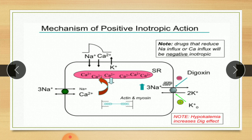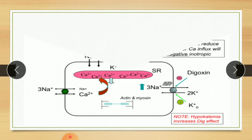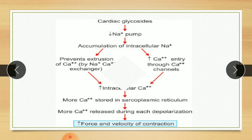So the target of digitalis cardioglycoside is the sodium-potassium pump. Cardioglycosides inhibit this sodium-potassium ATPase pump, causing accumulation of intracellular sodium, which prevents extrusion of calcium and increases calcium entry through the calcium channel. Overall, there is an increase in intracellular calcium. More calcium stored in the sarcoplasmic reticulum also increases, which causes an increase in the force and velocity of contraction.